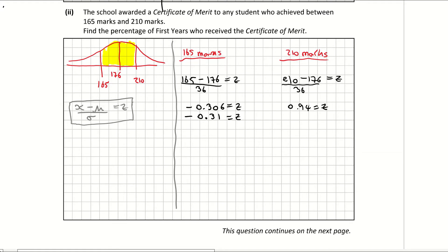I'm going to look up positive 0.31 in my log tables because the table only has positives — it's symmetrical. When I look up positive 0.31, I get a probability of 0.6217. Now I need to subtract this from 1, which gives me 0.3783. I'm subtracting from 1 because I had a negative Z score.